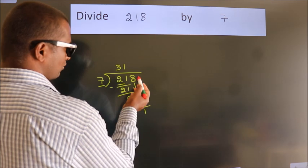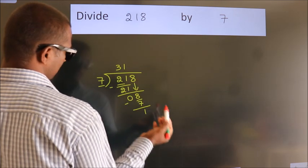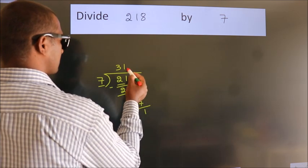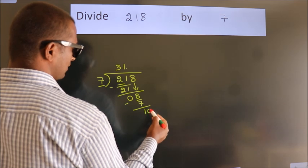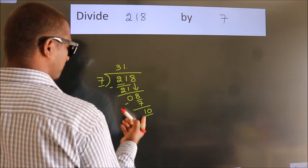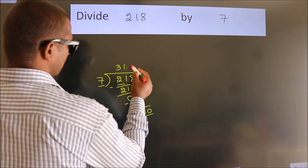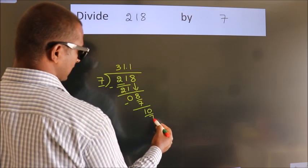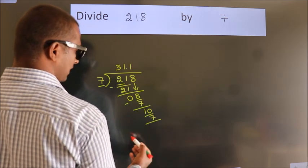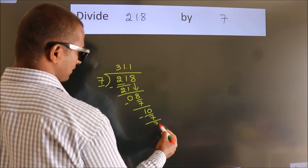After this, no more numbers to bring down. So 10. A number close to 10 in the 7 table is 7 once, 7. Now we subtract. We get 3.